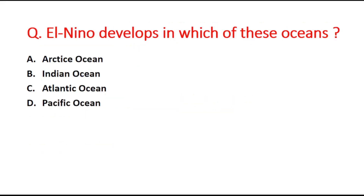Next question: El Niño occurs in which of these oceans? Option A is arctic ocean, B is Indian ocean, C is Atlantic ocean, and D is Pacific ocean. The right answer is option D, Pacific ocean.